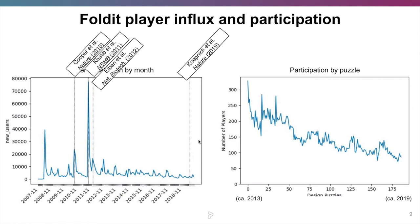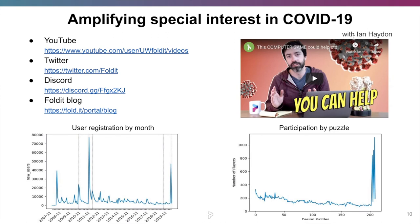When coronavirus hit and we realized we could contribute to tackling the pandemic, we tried something new. Working with my colleague Ian Hayden, a science writer at the Institute, we really doubled down on social media and outreach efforts to promote our Foldit coronavirus puzzles. We generated YouTube videos explaining the science behind coronavirus and how Foldit could help, along with blog posts and engagement with new players on Twitter and Discord. It was pretty effective — we tapped into natural excitement around an existing problem. March 2020 was our second biggest month for user registration in all of Foldit history, and participation in our coronavirus puzzles went through the roof.